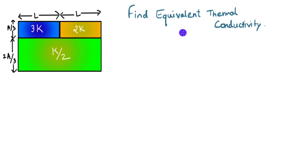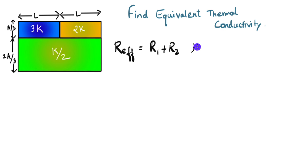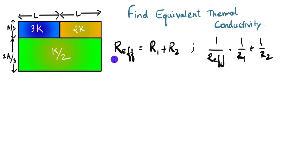How do we figure out the equivalent conductivity when the blocks are in series and parallel? Let's write that down. For series, R_effective equals R1 plus R2 — this is the equivalent thermal resistance. And for parallel, 1 over R_effective equals 1 over R1 plus 1 over R2. Thermal resistance is written as R equals L divided by K times A, where L is the length, K is thermal conductivity, and A is area.